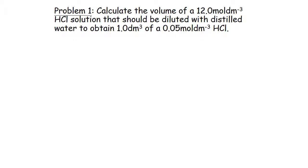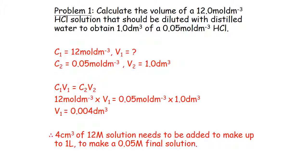Problem one: calculate the volume of 12 mol/dm³ HCl solution that should be diluted with distilled water to obtain 1 dm³ of 0.05 mol/dm³ acid. Using C₁V₁ = C₂V₂: 12 × V₁ = 0.05 × 1, so V₁ = 0.04 dm³. Therefore 4 cm³ of 12 M solution needs to be added and made up to 1 litre to give a 0.05 M final solution.